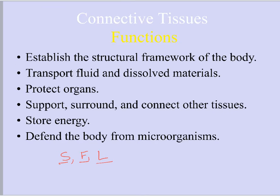In general, connective tissues do a number of things. First, they establish an internal framework for the body. Think of the skeletal system — that's your internal framework, giving your body structure and rigidity. Everything in your body, either directly or indirectly, hangs off your skeleton. Bone is a type of connective tissue, and your bones provide structural framework.